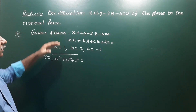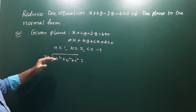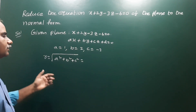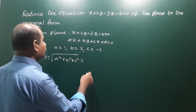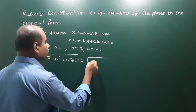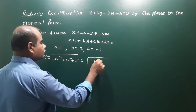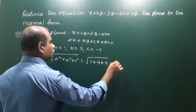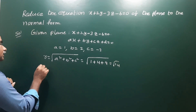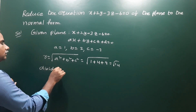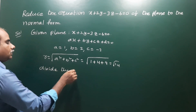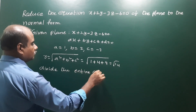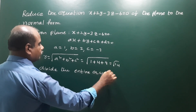For the normal form, the entire equation is divided by r. So r equals the square root of a squared plus b squared plus c squared: 1 squared is 1, 2 squared is 4, and minus 3 whole squared is 9. So r is equal to the square root of 14. Divide the entire equation by r.